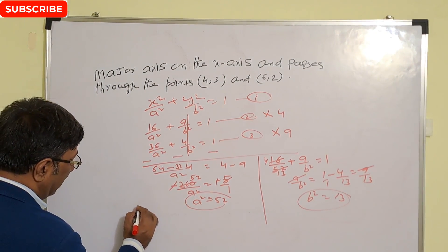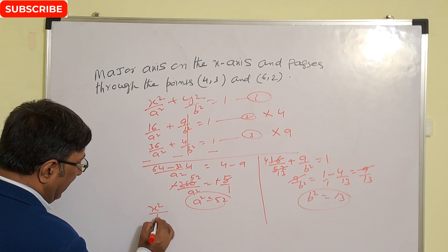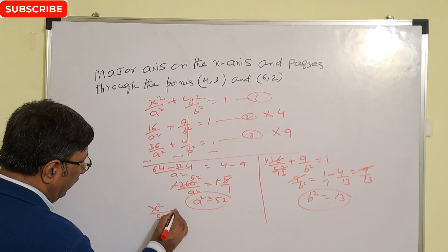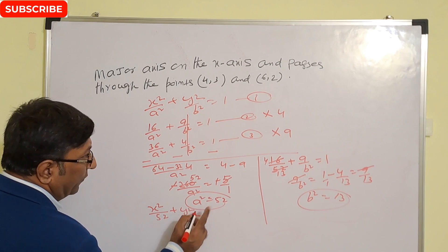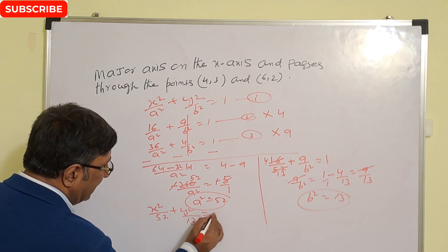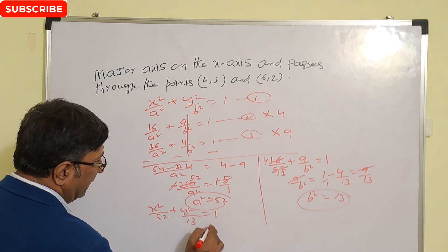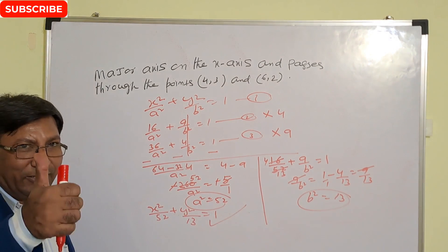Now we have a² and b², so the equation of the ellipse is x² upon 52 plus y² upon 13 equal to 1. This is the correct answer.